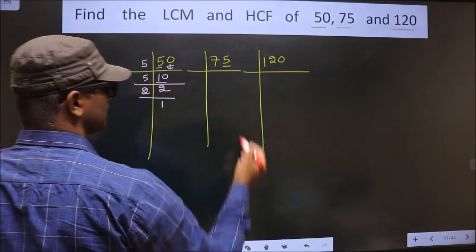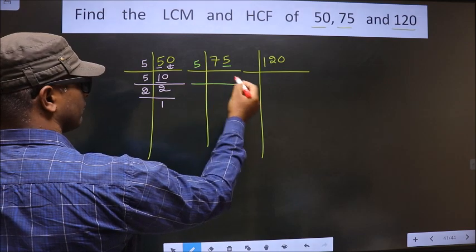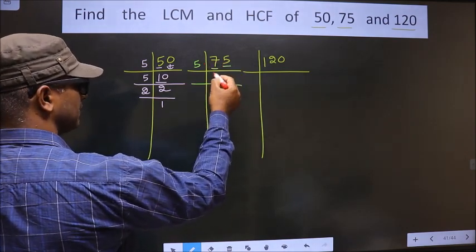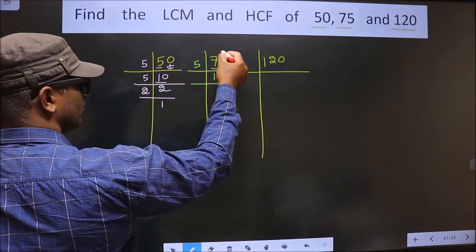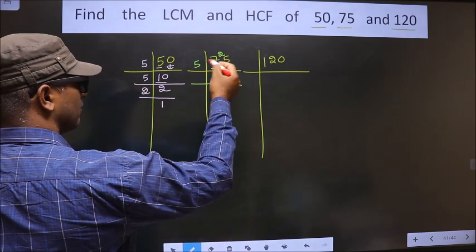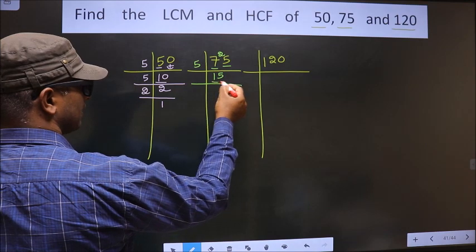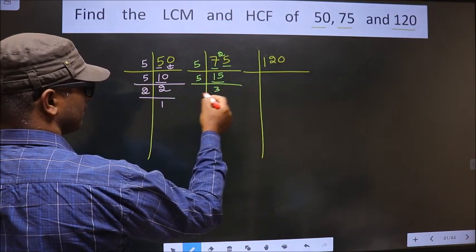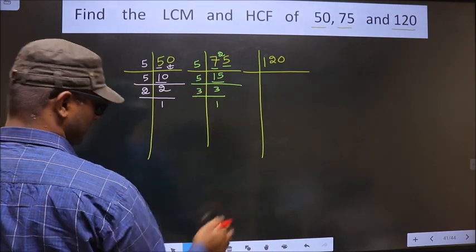Now for this number, last digit is 5, so we take 5 here. First number is 7. A number close to 7 in 5 table is 5 once 5. 7 minus 5 is 2, 2 carried forward making it 25. When do we get 25 in 5 table? 5, 5 is 25. Now here we have 15. 15 is 5, 3 is 15. Now 3 is a prime number, so we take 3 once 3.